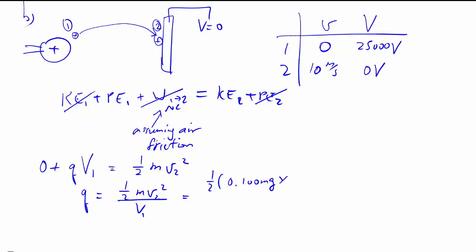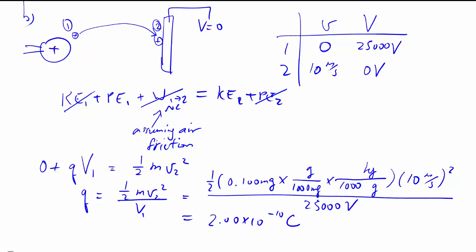They give us these little flecks of paint in milligrams, so we have to do the necessary conversion. Again, we're not satisfied with just grams. We want kilograms because that's what Newtons are based on and joules. V squared divided by voltage, giving us the answer.